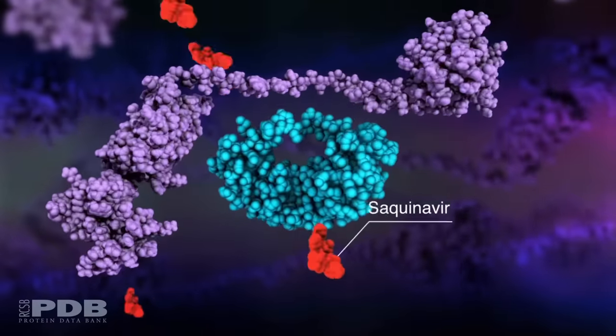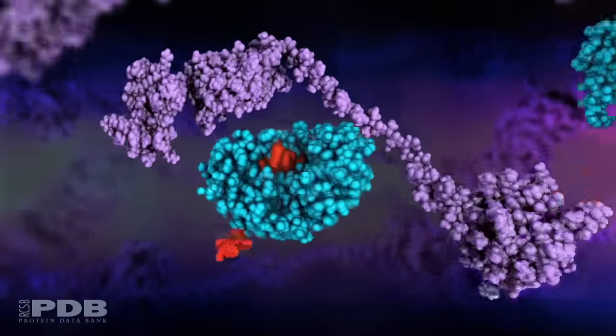Drugs like saquinavir mimic the proteins cut by HIV protease, blocking maturation of the virus.